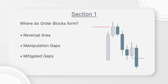Because not every up candle or down candle is an order block. Order blocks form in specific areas. The first area is a reversal area. The second area is order blocks form after manipulation gaps. The third one is order blocks also form in close proximity and after mitigated gaps.